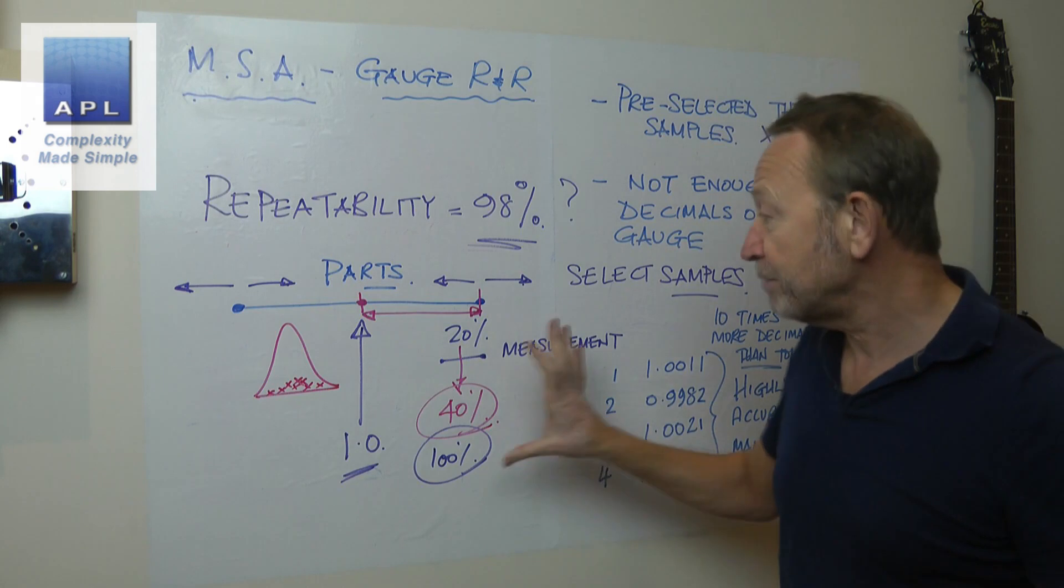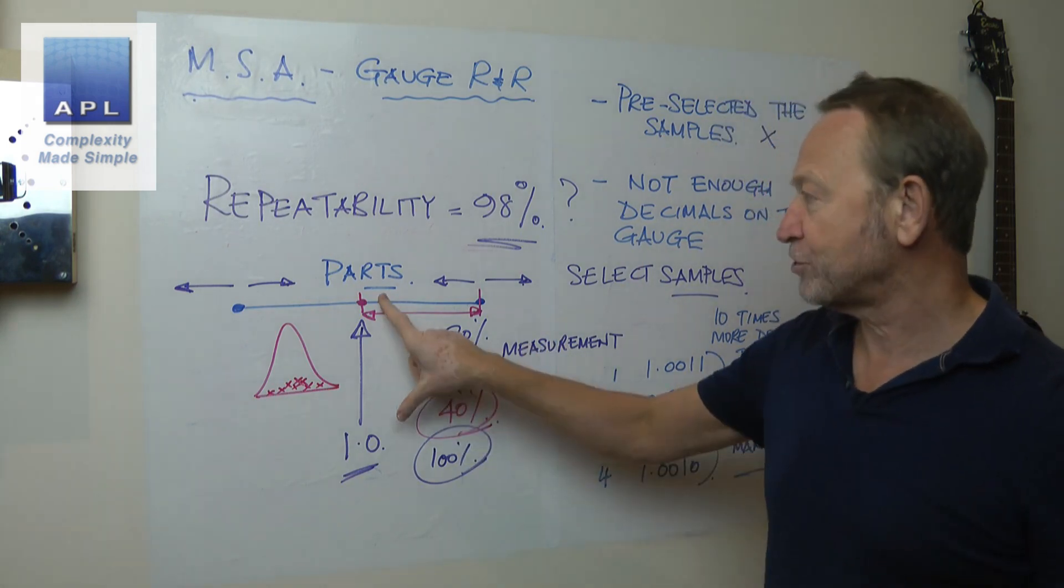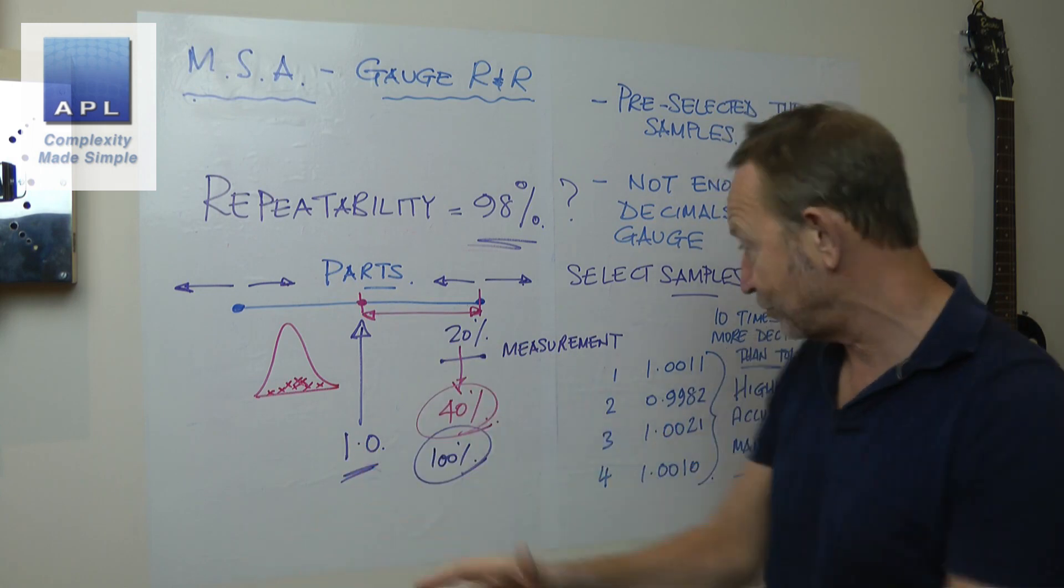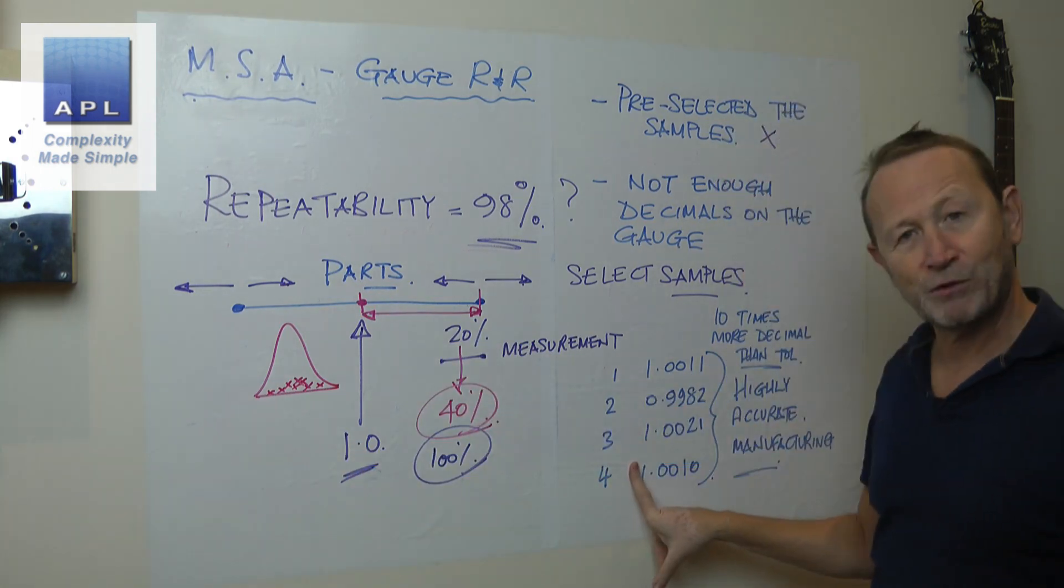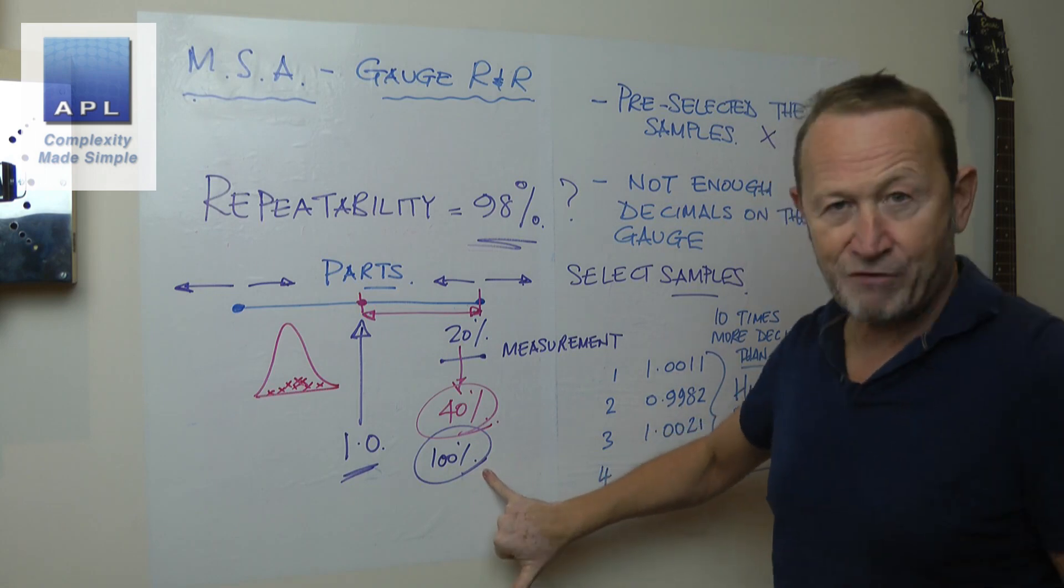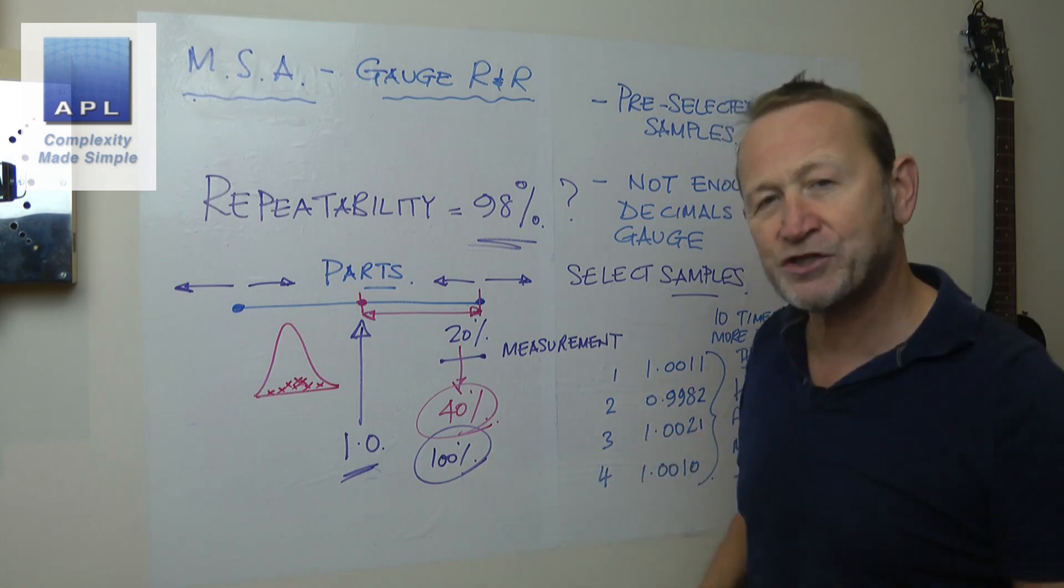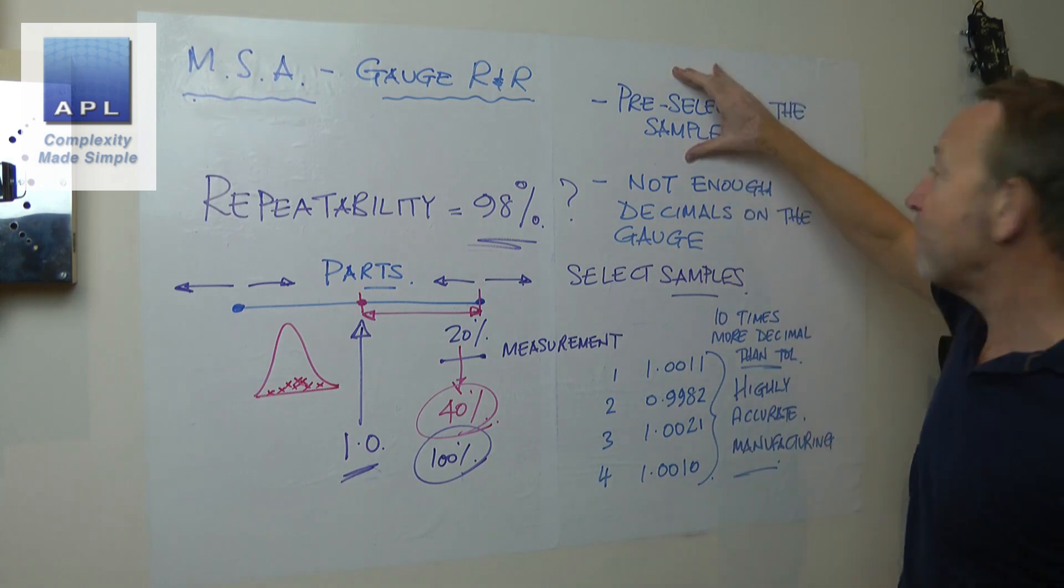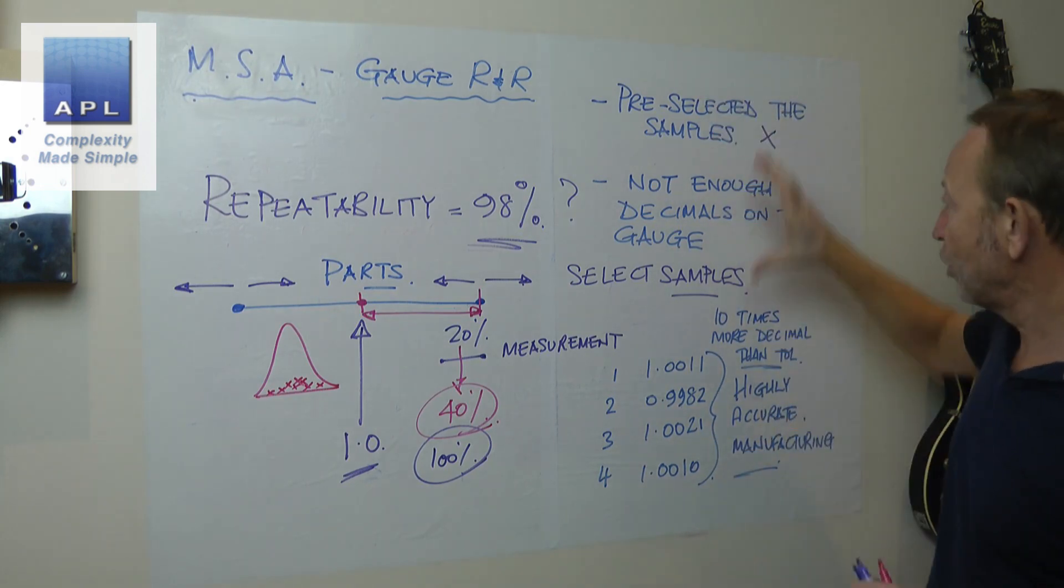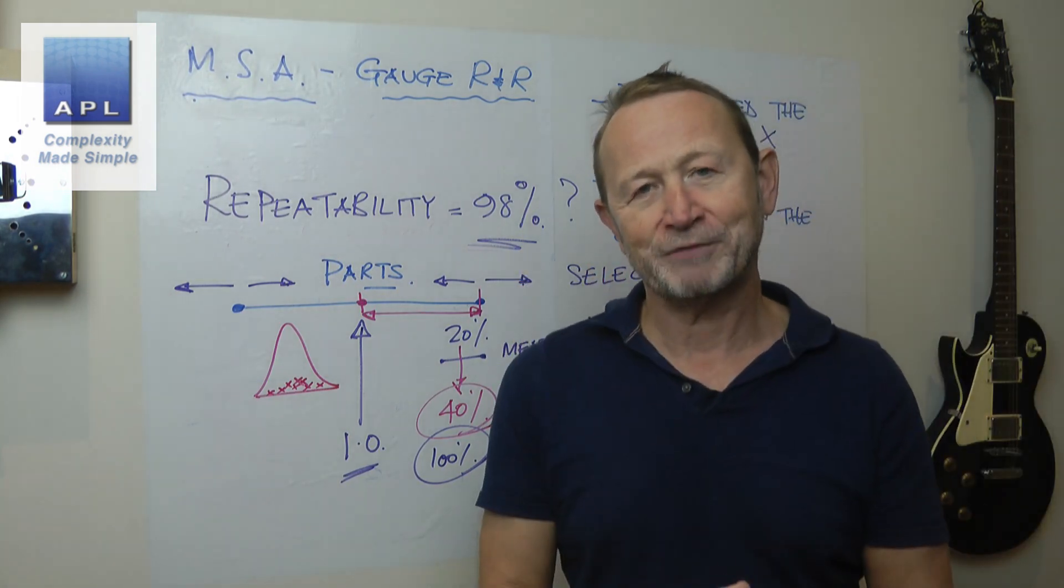So, Imad, the number you're getting is correct. That's the first thing. Because there is no variability in the parts that you've shown to the measurement system. They are all coming out to be one. And therefore, the maths is correct. 100% of all the variability it sees is the measurement system. You may have pre-selected the samples. Go back and correct that. Or you might not have enough decimals on your measurement system.